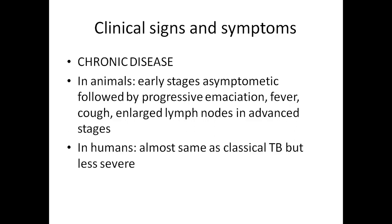In animals, in the early stages the animal is usually asymptomatic, followed by progressive emaciation — meaning the animal gets weak day by day. Similarly, there is fever, cough, and enlarged lymph nodes in advanced stages. In humans, as you have already studied this disease in medical microbiology, you can quickly review it from your previous lectures.